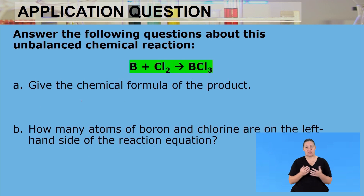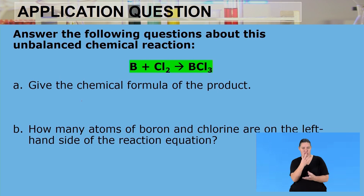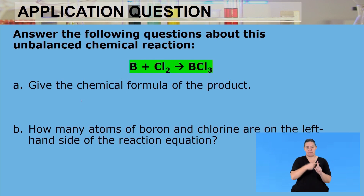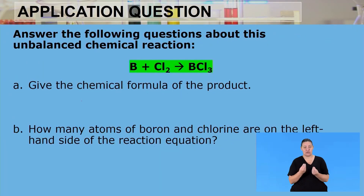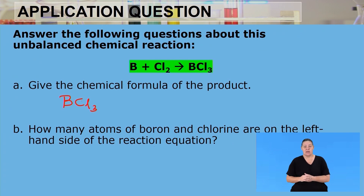The next question is based on an unbalanced chemical reaction: B + Cl2 → BCl3. Part A asks for the chemical formula of the product. The products are always on the right-hand side of the arrow, so the product is BCl3 — capital B, capital C, lowercase l, with a subscript of 3.